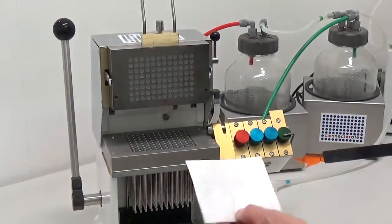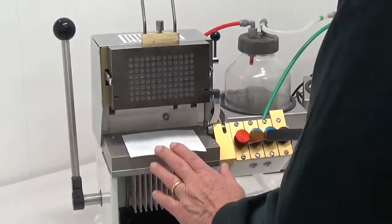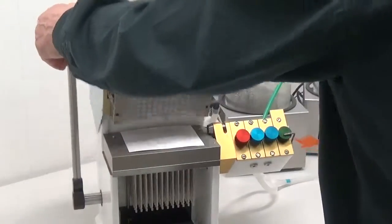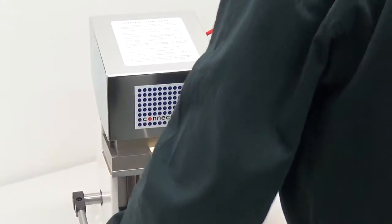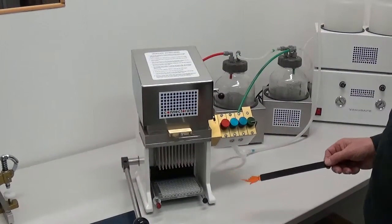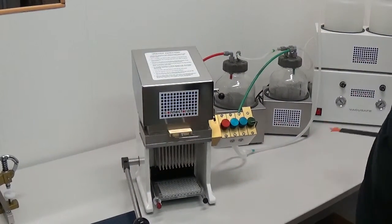Now you can place the filter mat on the pipetting head and close the harvester again. Now you can start the harvesting and the pump system.